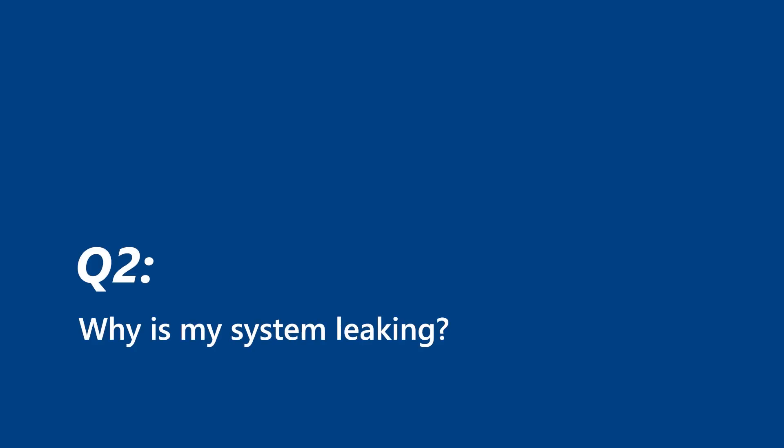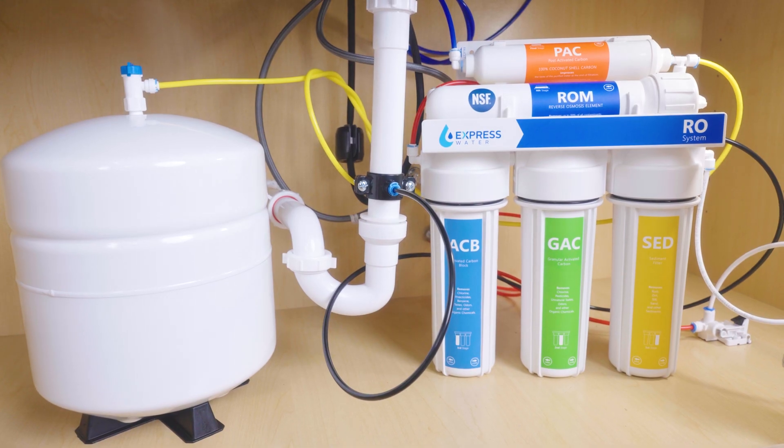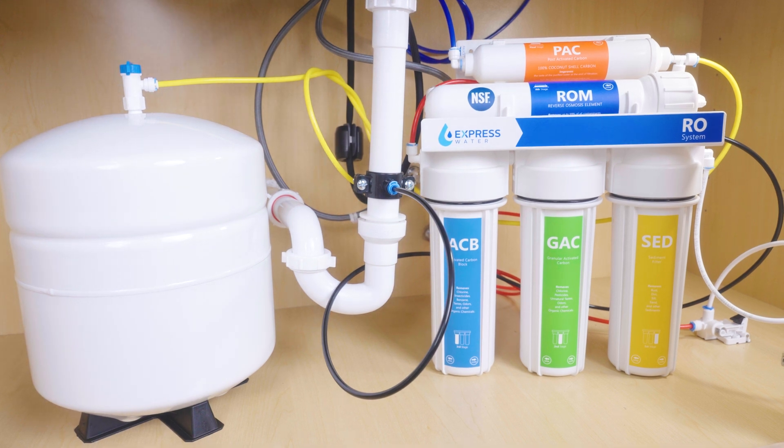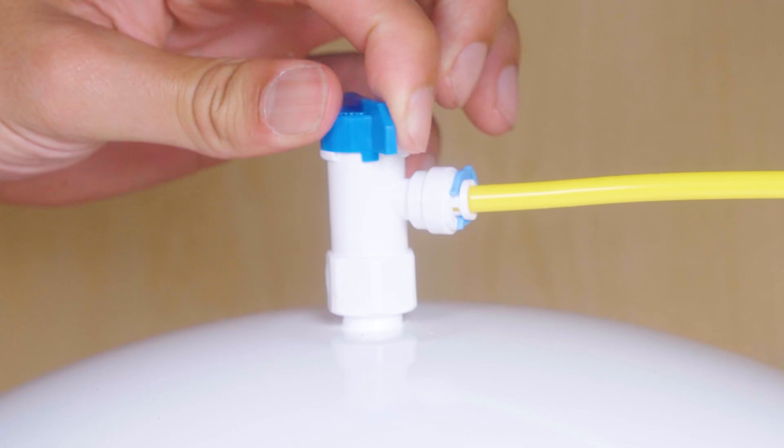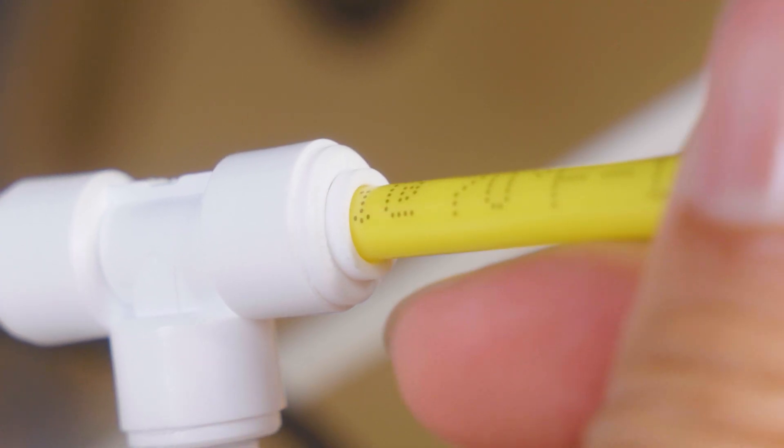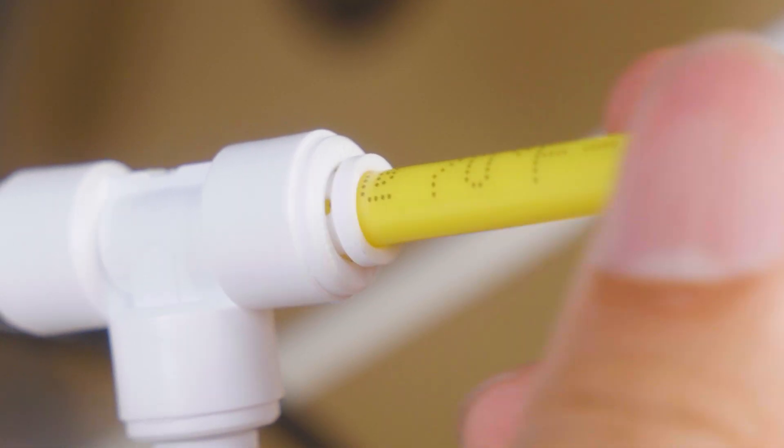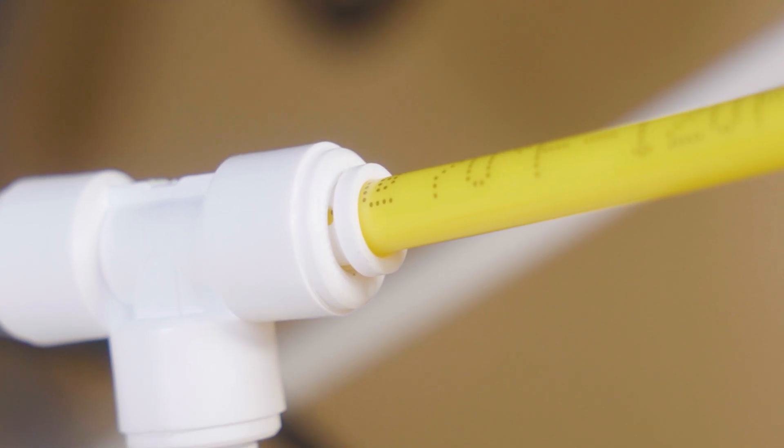Leaks usually happen at tubing connections or filter housings. Here's how to fix them: turn off both the feed water and tank valves right away. Check that the tubing is inserted all the way, at least five-eighths of an inch.